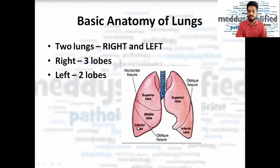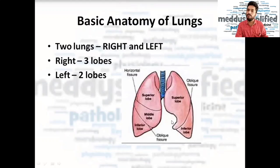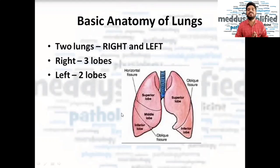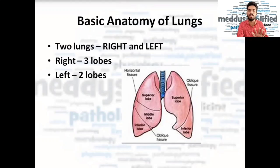You can see the superior lobe, middle lobe, and inferior lobe in the right lung, whereas the left lung has a superior lobe and inferior lobe. There is a notch here due to which there is one lobe less in the left lung — this is known as the cardiac notch, where the heart is situated. So this is the basic anatomy you should know to understand the severity score. In total, we have three right lobes and two left lobes — five lobes in the human lung.